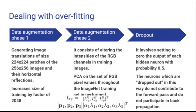It involves setting to 0 the output of each hidden neuron with probability 0.5. So every time an input is presented, the neural network samples a different architecture, but all these architectures share weights. This technique reduces complex co-adaptation of neurons since a neuron cannot rely on the presence of particular other neurons. It is therefore forced to learn more robust features that are useful in conjunction with many different random subsets of the other neurons. At the test time, we use all the neurons by multiplying their outputs by 0.5, which is a reasonable approximation to taking the geometric mean of the predictive distributions produced by the exponentially many dropout networks.